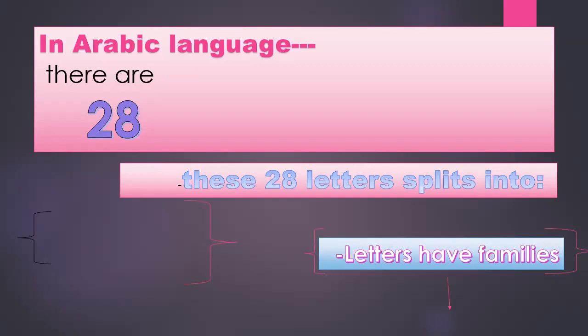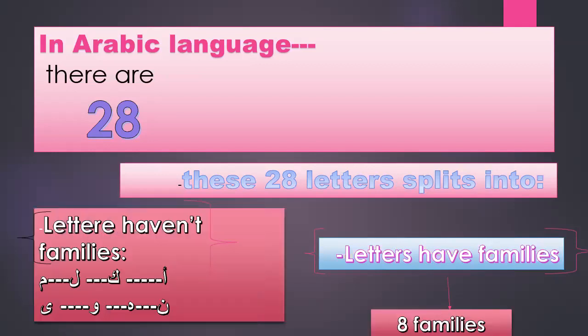Letters That Have Families consist of 8 families, which make up 20 letters. Letters That Haven't Families are 8 letters. Now we will recognize the 8 families.